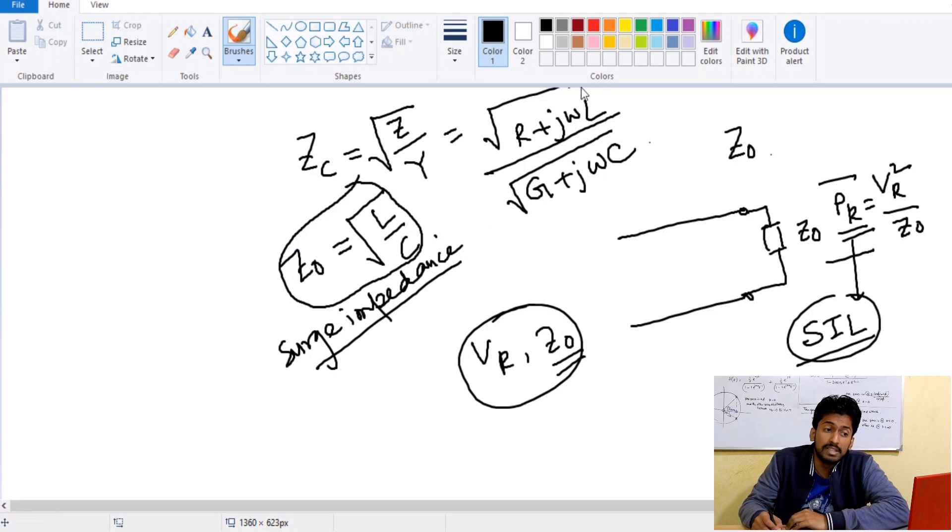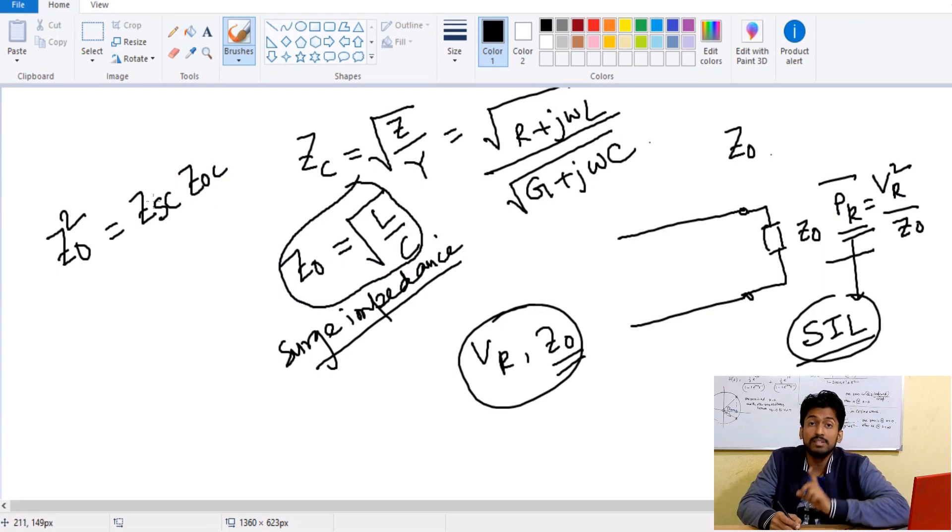So there are different things that are there, and we can actually calculate this Z naught by having two different tests or two different connections to the transmission line. And we can be able to easily calculate that Z naught squared will be equals to Z_SC into Z_OC.